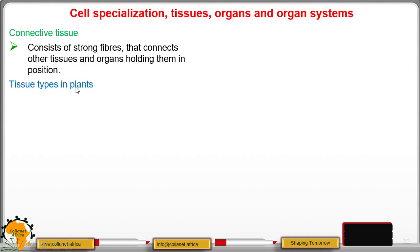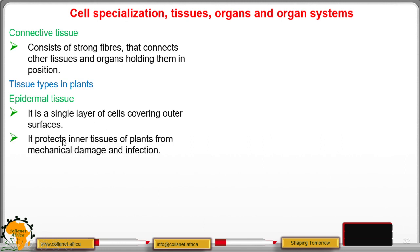We move to tissue types in plants and they include the epidermal tissue. It is also a single layer of cells just as the epithelial tissue in animals and its role is to cover outer surfaces. It protects the inner tissues of plants from mechanical damage as well as infection.